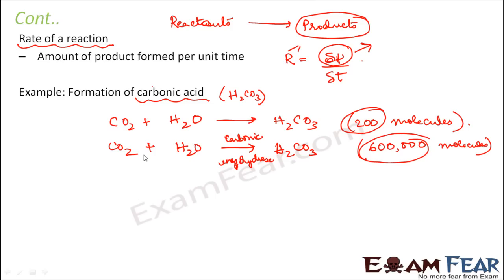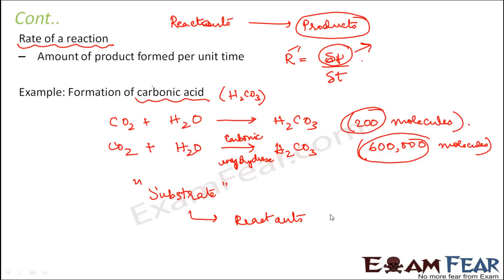The reactants on which enzymes act are known as substrates. In the carbonic acid example, CO2 and H2O are the reactants — or substrates — and H2CO3 (carbonic acid) is the product. Our aim now is to understand how enzymes increase the rate of a reaction.